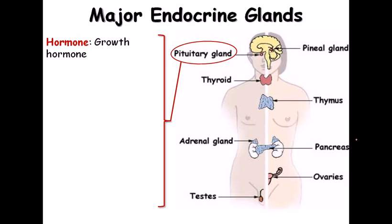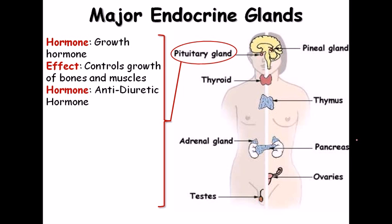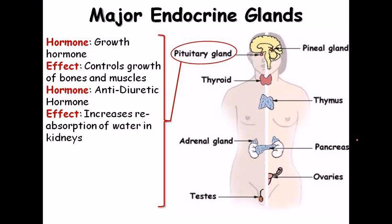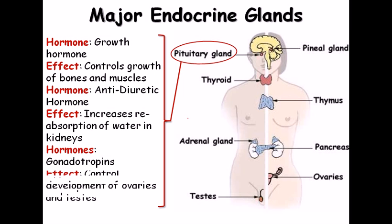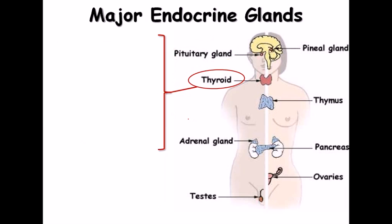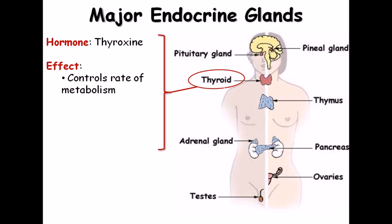The pituitary gland produces many hormones: growth hormone, which controls the growth of bones and muscles; antidiuretic hormone, which increases water reabsorption in the kidney — failure of this hormone results in diabetes insipidus; and gonadotropins, which control the development of ovaries and testes and stimulate those glands to secrete hormones.